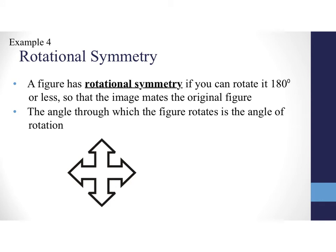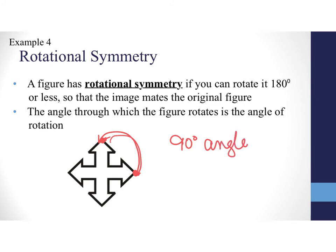Another concept in rotation is rotational symmetry. A figure has rotational symmetry if you can rotate it 180 degrees or less so that the image matches the original figure. The angle through which the figure rotates to match itself is called the angle of rotation. For example, rotating a square 90 degrees produces the same image, so it has a 90-degree angle of rotation.